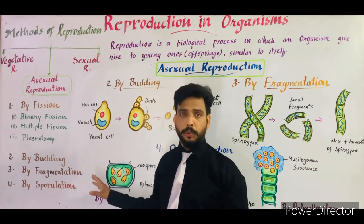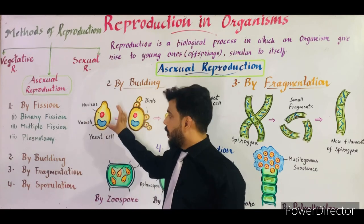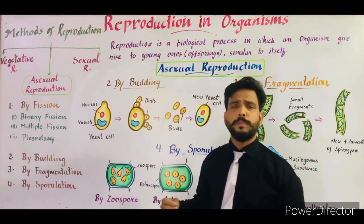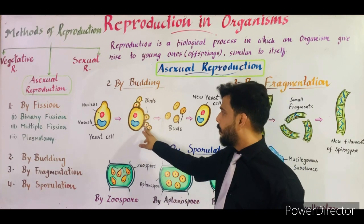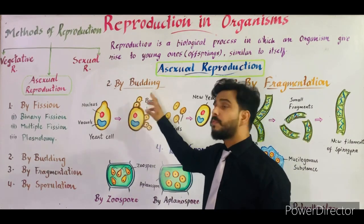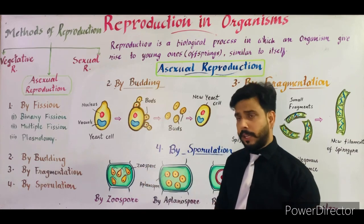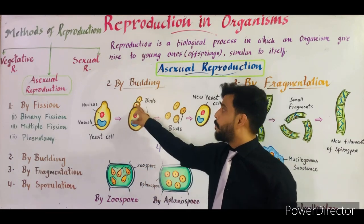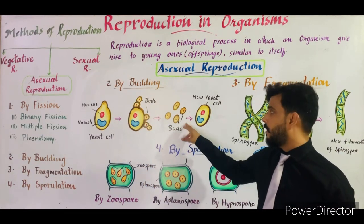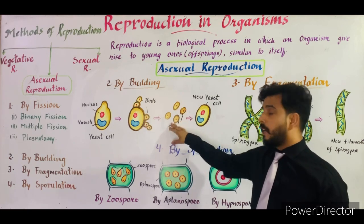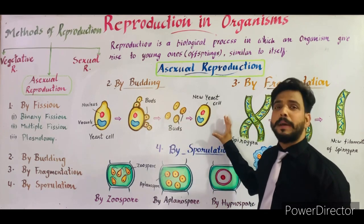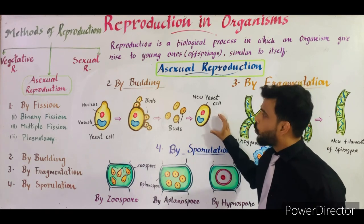This yeast cell gives rise to numerous small buds. As you can see in the diagram, these are the small buds which arise from the yeast cell. After some time these buds detach from the main cell, and these detached buds develop and form a new yeast cell.